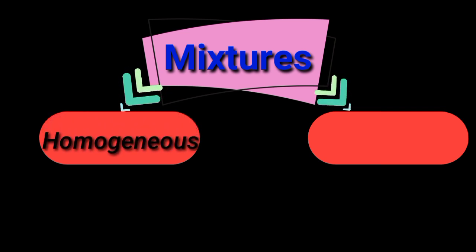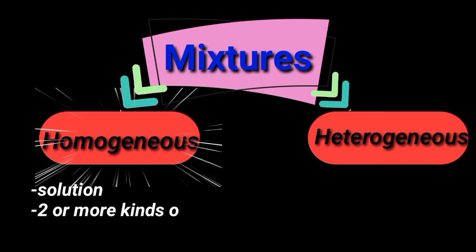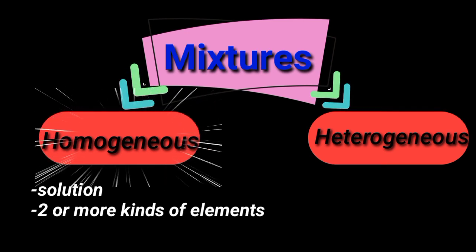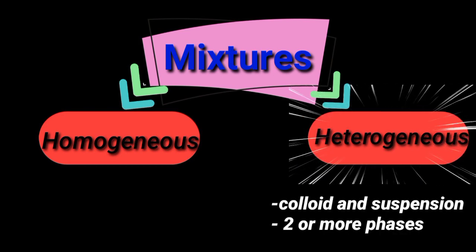A homogeneous mixture, also known as a solution, consists of two or more kinds of elements or compounds physically combined and existing in one phase. Its components can be separated by physical means. A heterogeneous mixture — including colloids and suspensions — consists of two or more phases which can be separated by physical means such as hand sorting, sieving, filtration, and others.